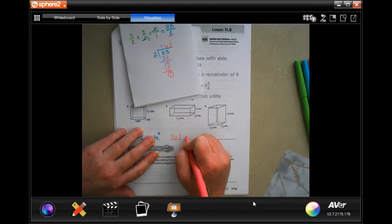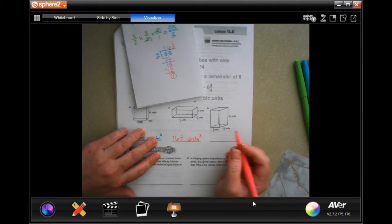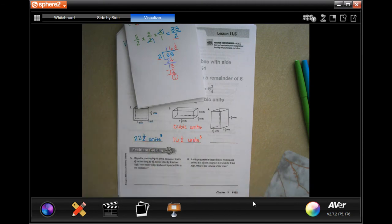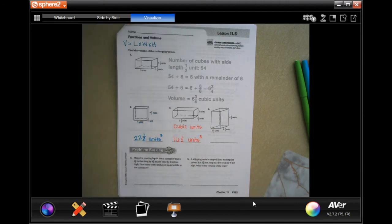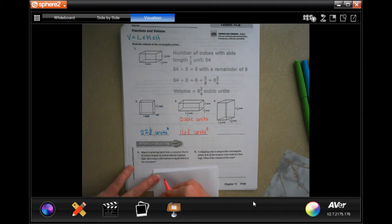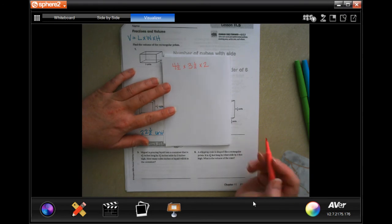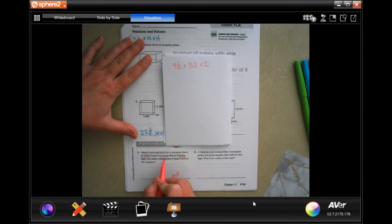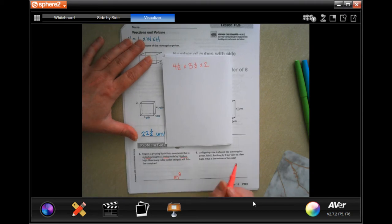And it's going to be unit cubed. You can also put cubic unit. That is also acceptable. It's just easier for me to write a pencil. All right. You guys, do number 4. We're going to go ahead and do number 5 together. Miguel is pouring liquid into a container that is 4½ by 3½ by 2. How many cubic inches filled the liquid? So, whatever it is, it's going to be in inches cubed. When you're multiplying inches by inches by inches, that's 1, 2, 3 inches, so that exponent is a 3.